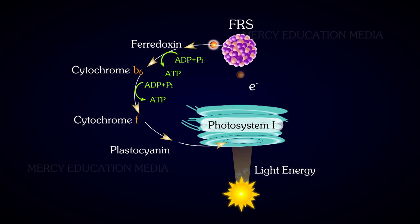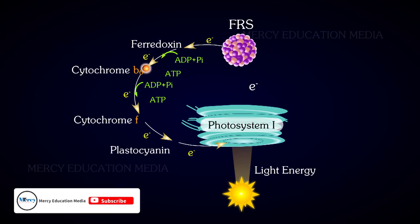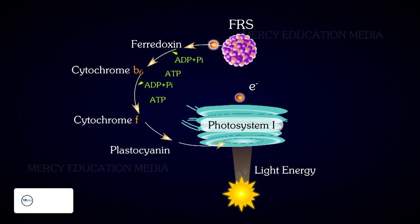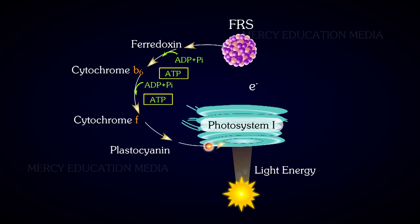These electron carriers facilitate the downhill transport of electrons from FRS to PS1. During this transport of electrons, two phosphorylations take place — one between ferredoxin and cytochrome B6, and the other between cytochrome B6 and cytochrome F. Thus, two ATP molecules are produced in this cycle.